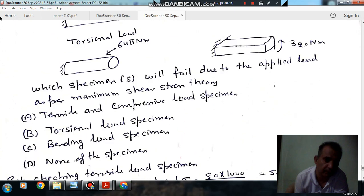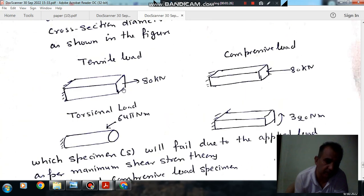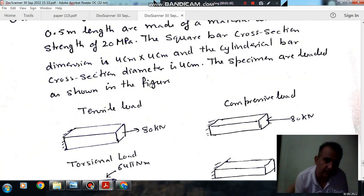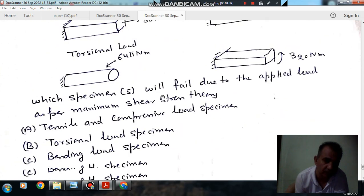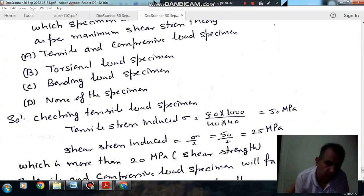For the tensile load specimen, the tensile load is 80 kN and the area is 4 cm × 4 cm, or 40 mm × 40 mm. The tensile stress induced is 80 × 1000 divided by 40 × 40, which equals 50 MPa.